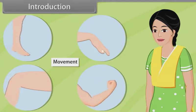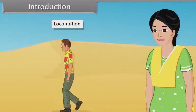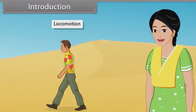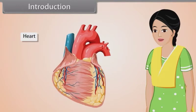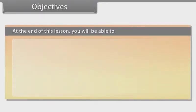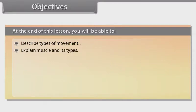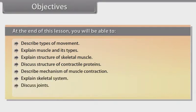Introduction and Objectives. At the end of this lesson, you will be able to: describe types of movement, explain muscle and its types, explain structure of skeletal muscles, discuss structure of contractile proteins, describe mechanism of muscle contraction, explain skeletal system, discuss joints, and list disorders of muscular and skeletal system.